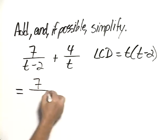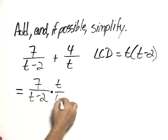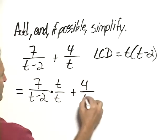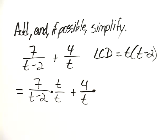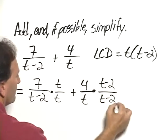So for 7 over t minus 2, we need to multiply by t over t. Plus 4 over t, here we need to multiply by t minus 2 over t minus 2.